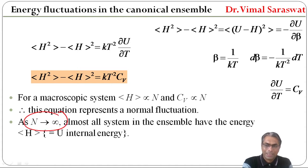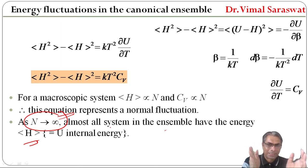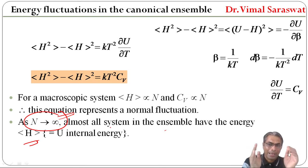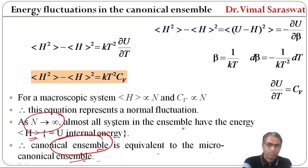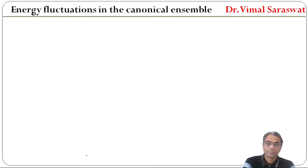As N tends to infinity, almost all systems in the ensemble have the energy equal to U, the internal energy. Therefore canonical ensemble is equivalent to the micro-canonical ensemble. In this case, canonical ensemble is equivalent to micro-canonical ensemble.